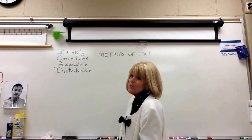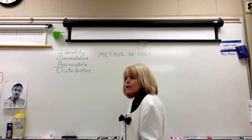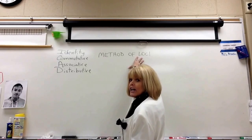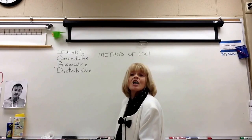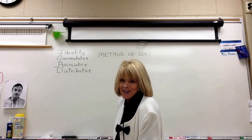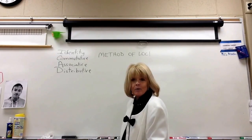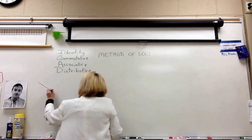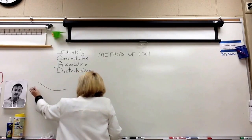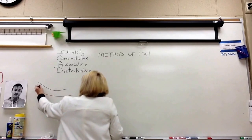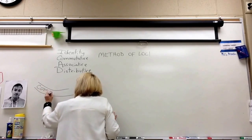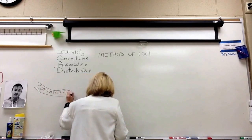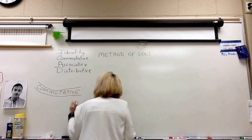We're going to start with the commutative property. We're going to put them in a location, but we're not going to use the playground — we're going to use your driveway. We're going to put the commutative property in your driveway. So I'm going to draw a picture of your driveway. And that's the commutative property in your driveway.